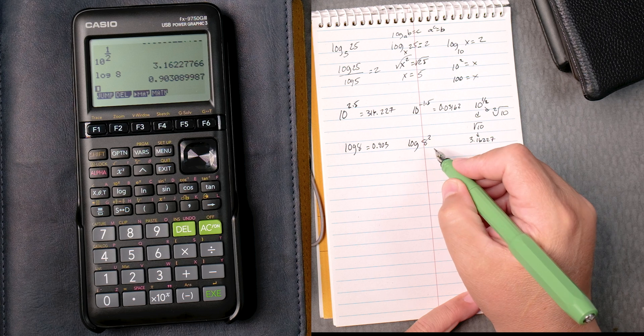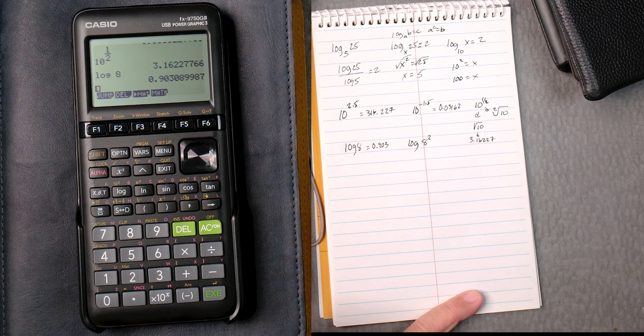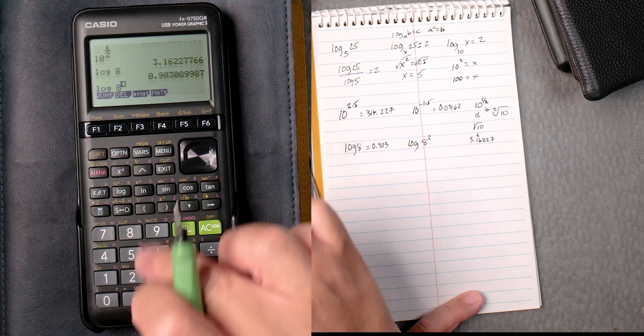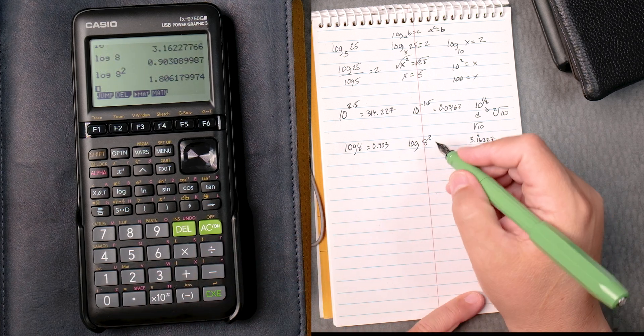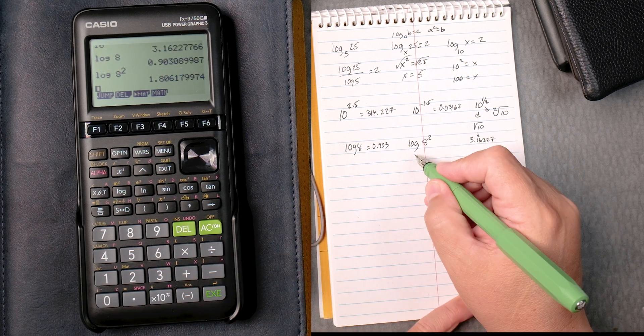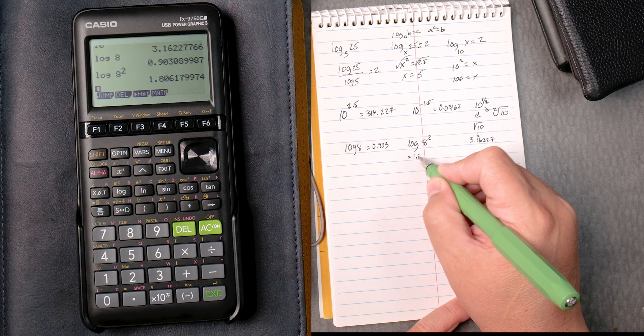Log of 8 squared. So that's going to be log 8, carat 2, execute. And that's going to give me 1.806.